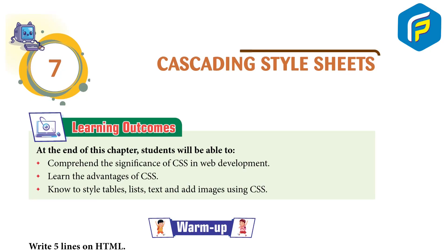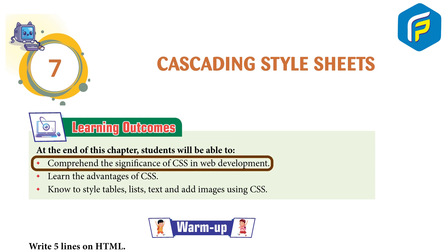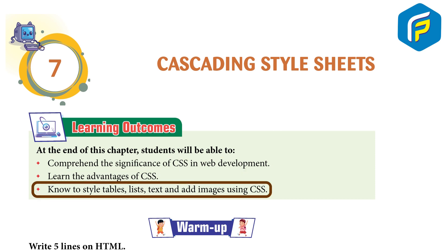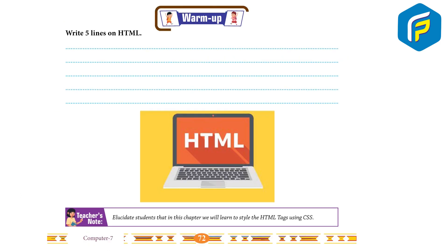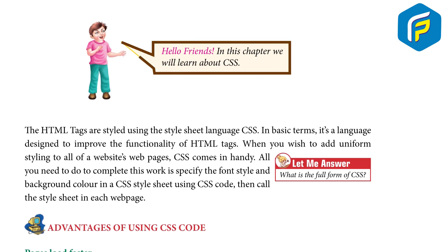Chapter 7: Cascading Style Sheets. Learning outcomes: at the end of this chapter, students will be able to comprehend the significance of CSS in web development, learn the advantages of CSS, know the style for tables, lists, text, and adding images using CSS. Warm up: write five lines on HTML. In this chapter we will learn to style the HTML tags using CSS.